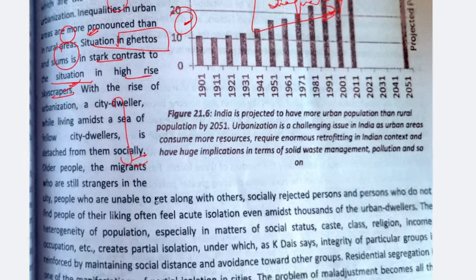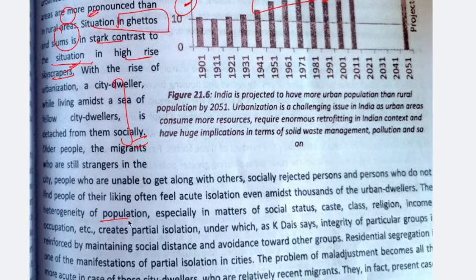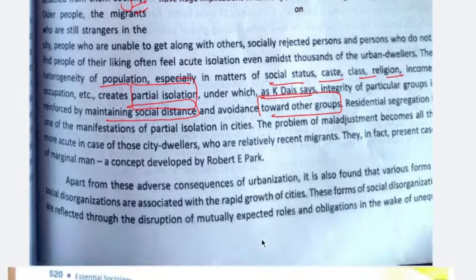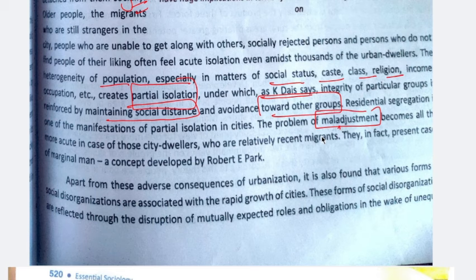The heterogeneity of population — especially in matters of social status, caste, religion, income, and occupation — leads to partial isolation. As Kay Dyes said, integrity of particular groups is reinforced by maintaining social distance and avoidance towards other groups. In cities, people prefer to keep social distance from one another and avoid other groups, living isolated lives. There is a high level of mistrust among people.